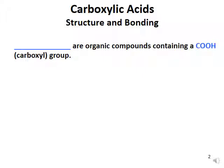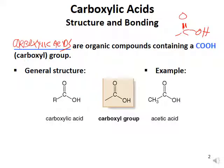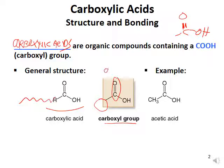Carboxylic acids are the organic compounds that contain the COOH group — a C double bond O (carbonyl) plus an O-H. The general structure has an R group, a carbonyl carbon with a double bond to oxygen, and an O-H off that last carbon. This portion — regardless of what's on the other side — is called the carboxyl group. Remember: this carbonyl carbon is not the same as the carboxyl group.